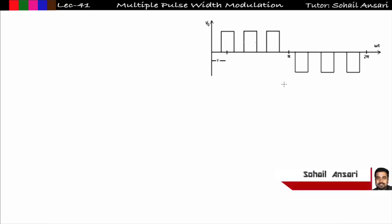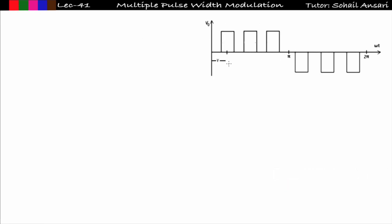This is my output voltage obtained in the multiple PWM technique. How we can generate this output voltage I already explained in the previous lecture (Lecture 40). From 0 to pi you can see the pulse width is 2d. I already defined that 2d equals the pulse width per half cycle, so each pulse width is 2d/n. This is my example of multiple PWM where n = 3.